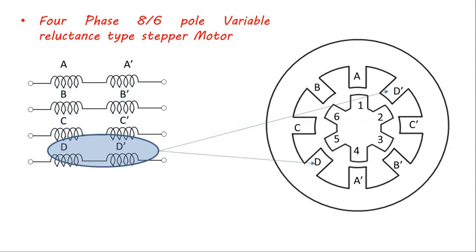The rotor doesn't carry any winding and it has a total 6 poles shifted by an angle of 60 degrees.